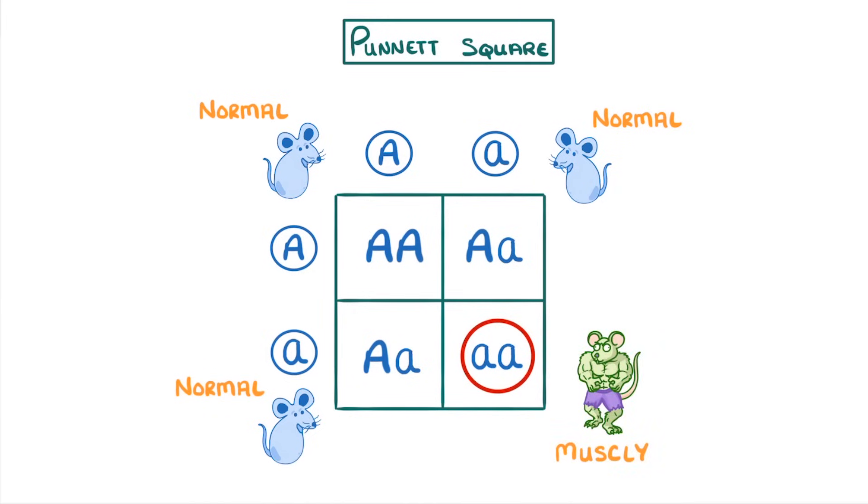You might sometimes be asked to write the outcome of genetic crosses as a ratio or probability, and in this case we'd say that we have a 3 to 1 ratio of normal to muscular mice. Or we could say that there is a 1 in 4 or 25% probability of having muscular offspring.